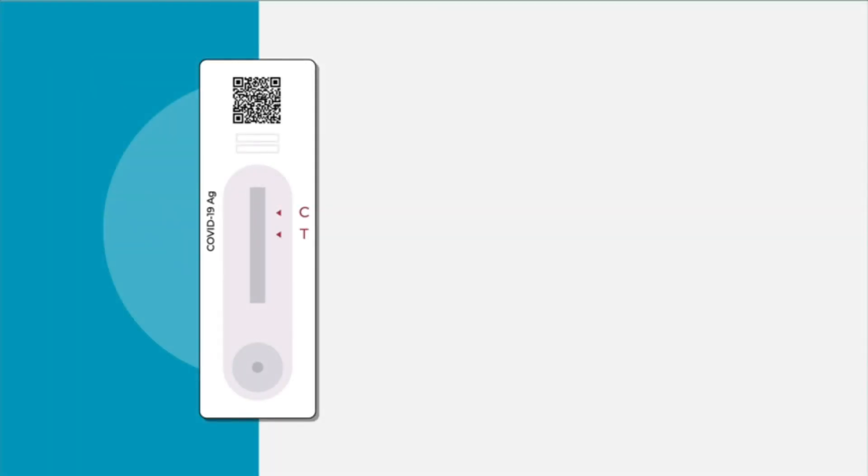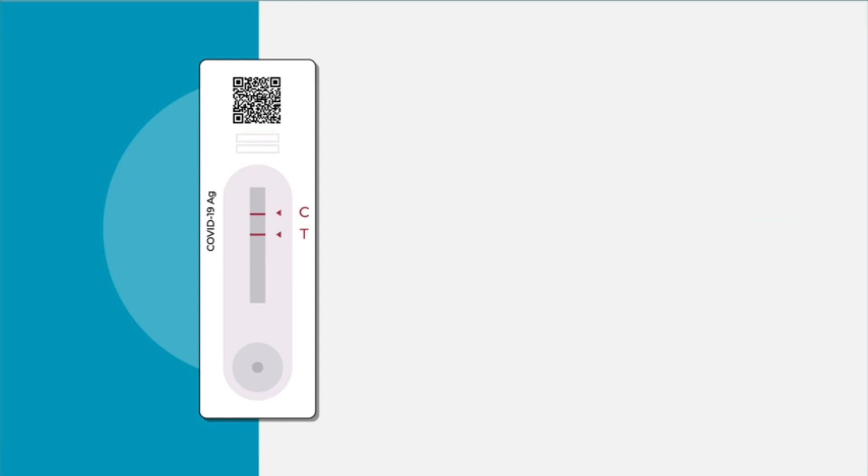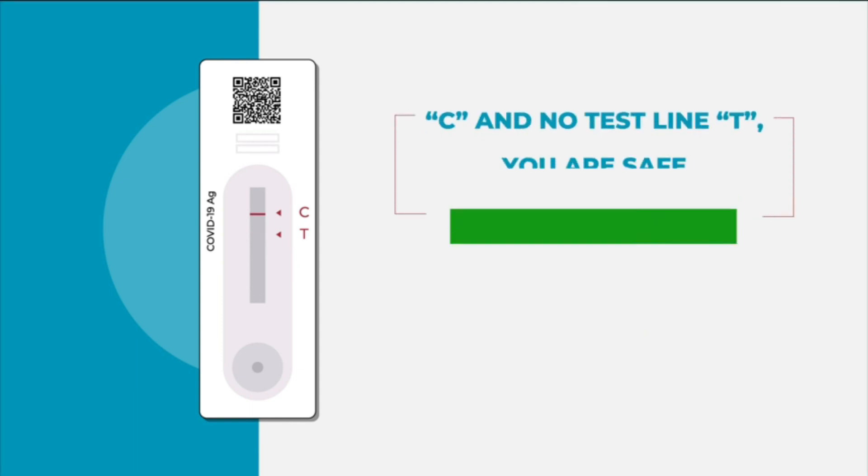If both control line C and test line T appears, you are COVID-19 positive. In case there appears only control line C and no test line T, you are safe.